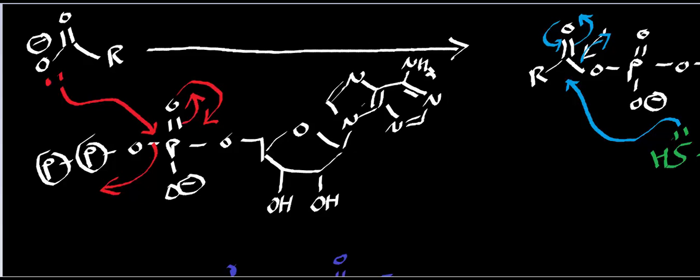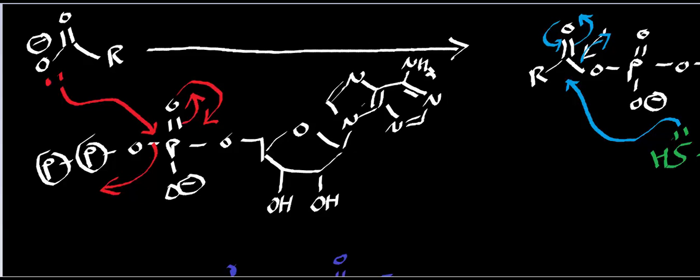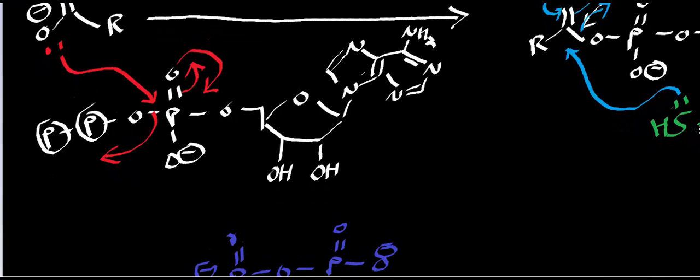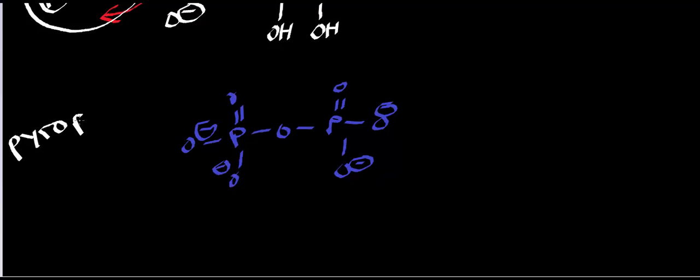So this particular enzyme is fatty acyl coenzyme A synthetase — you could also call it fatty acid CoA ligase, that's another name for it. It uses ATP, and therefore it's a synthetase. Notice that in this process we generated pyrophosphate, which I drew here in its full structure — it's essentially two phosphates bound together in a phosphodiester bond.